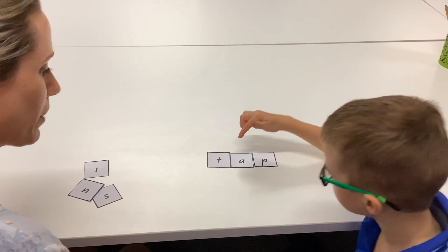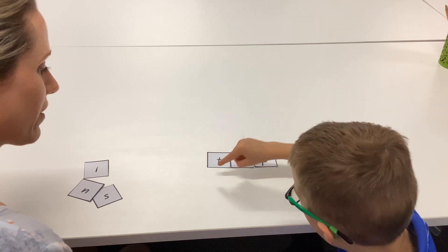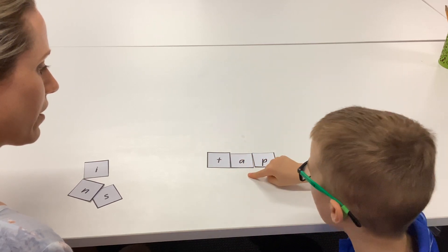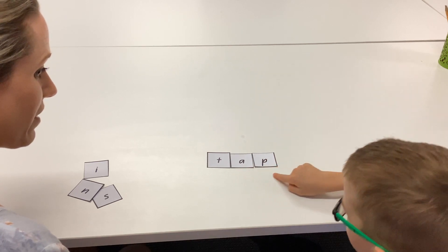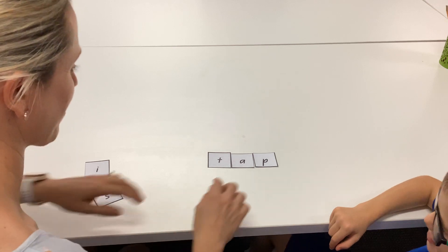Can you point to each sound and then blend them for me? It, a, p, t, a, p, t, a, p, t, a, p, t, a, p, tap. Beautiful. What's that word? Tap. Tap. Well done. Great job Tom.